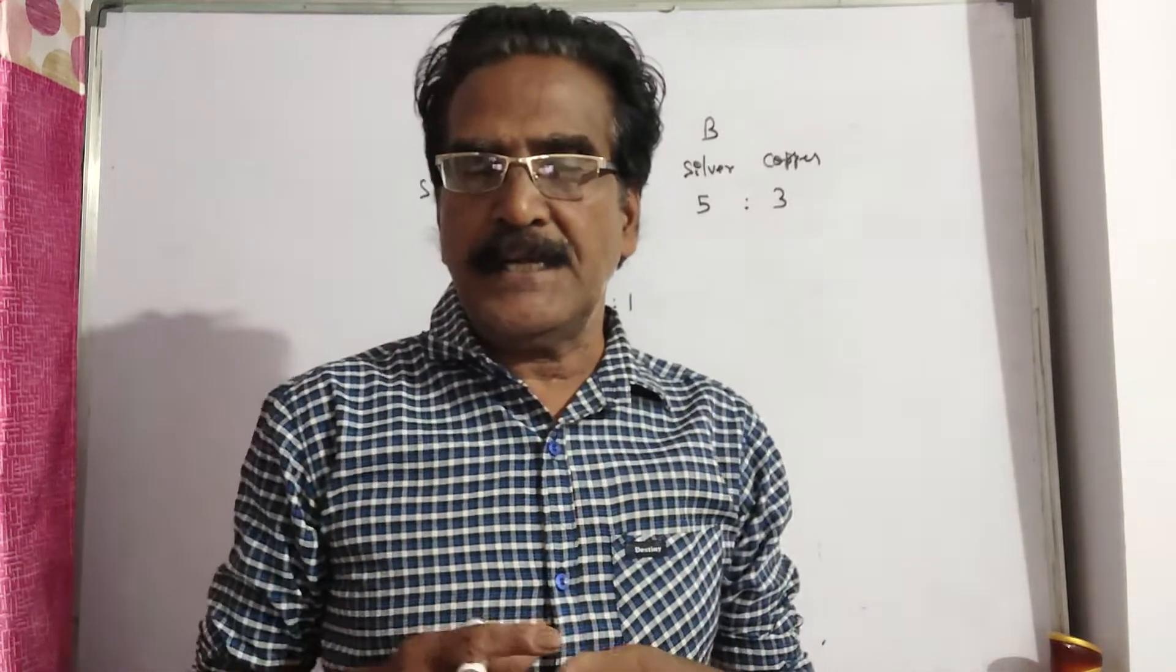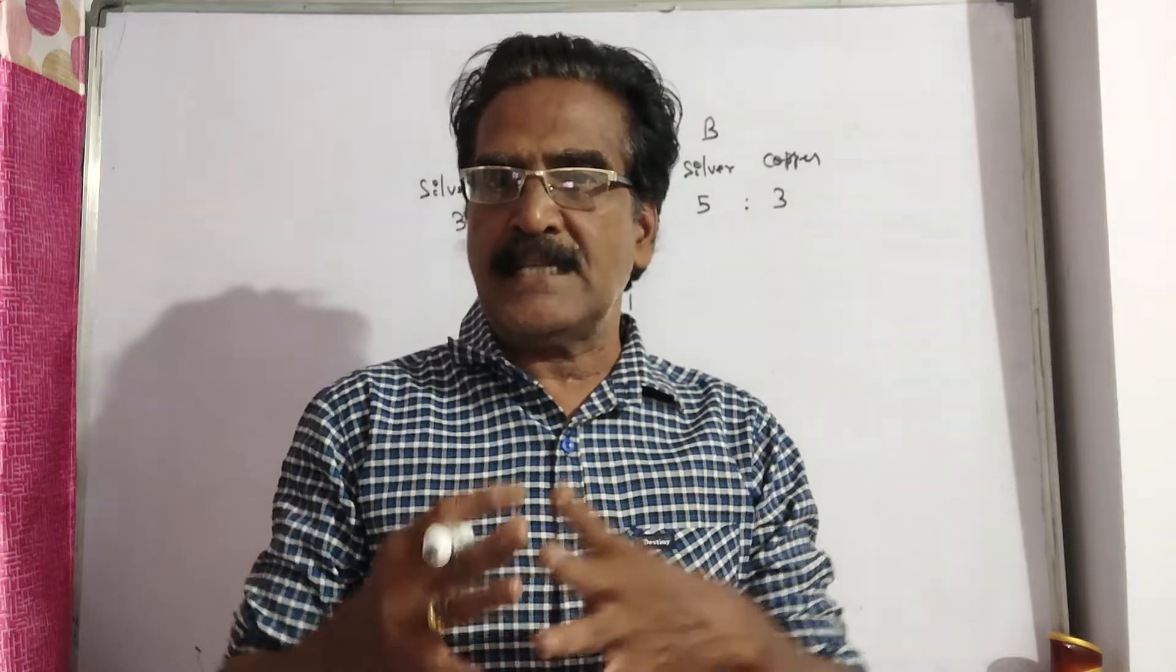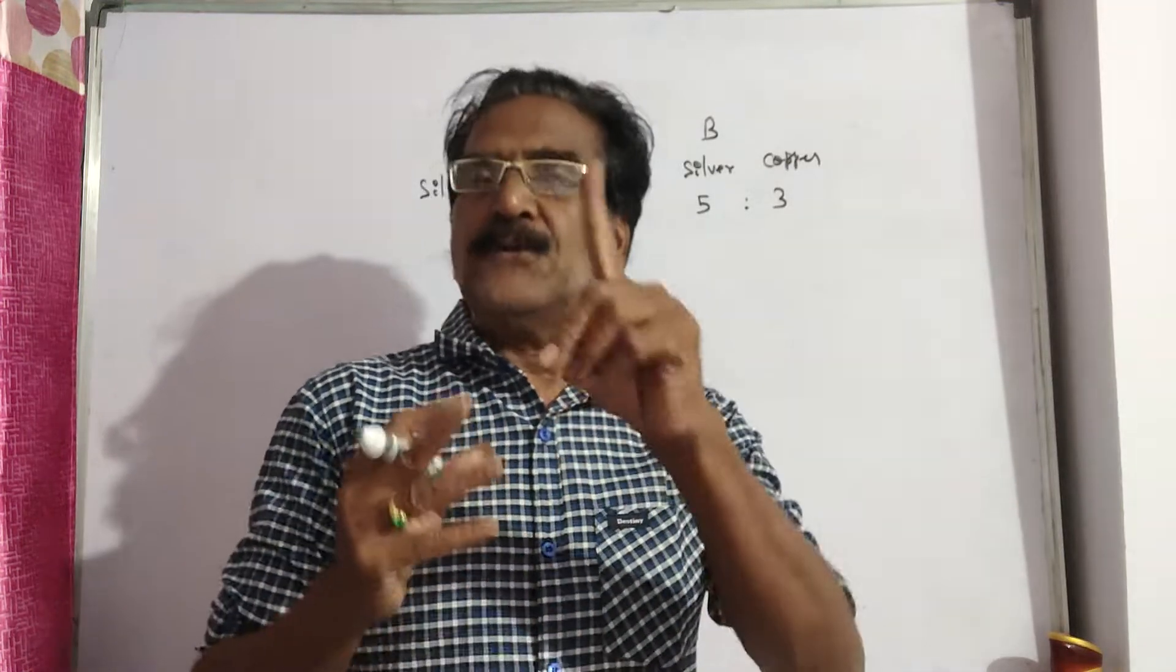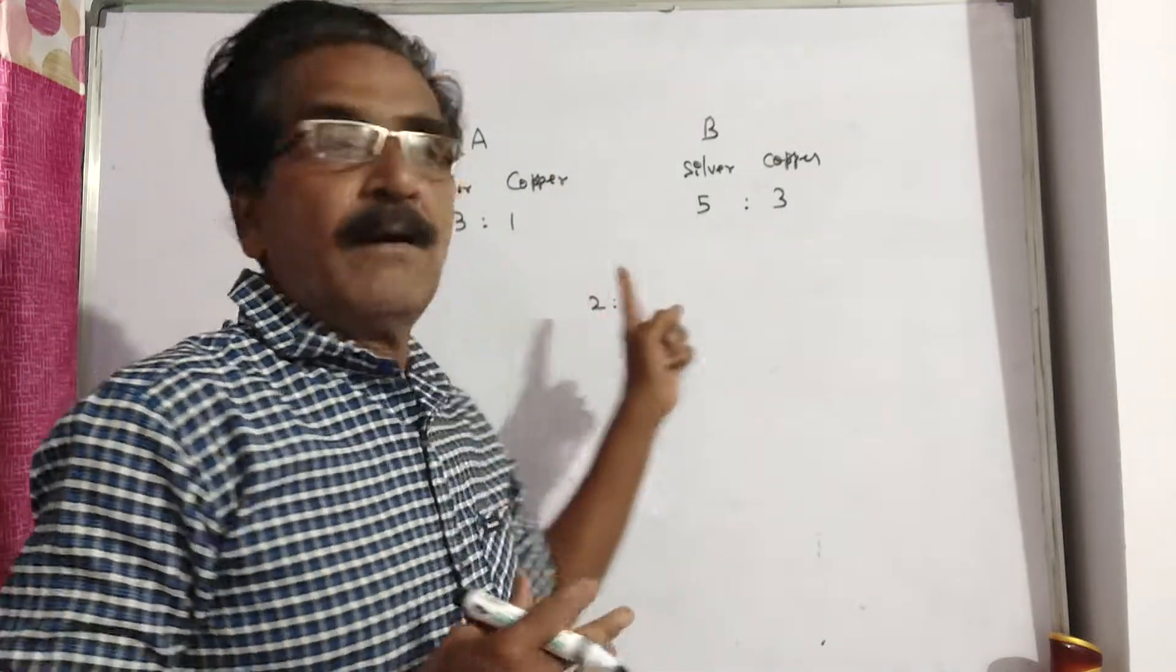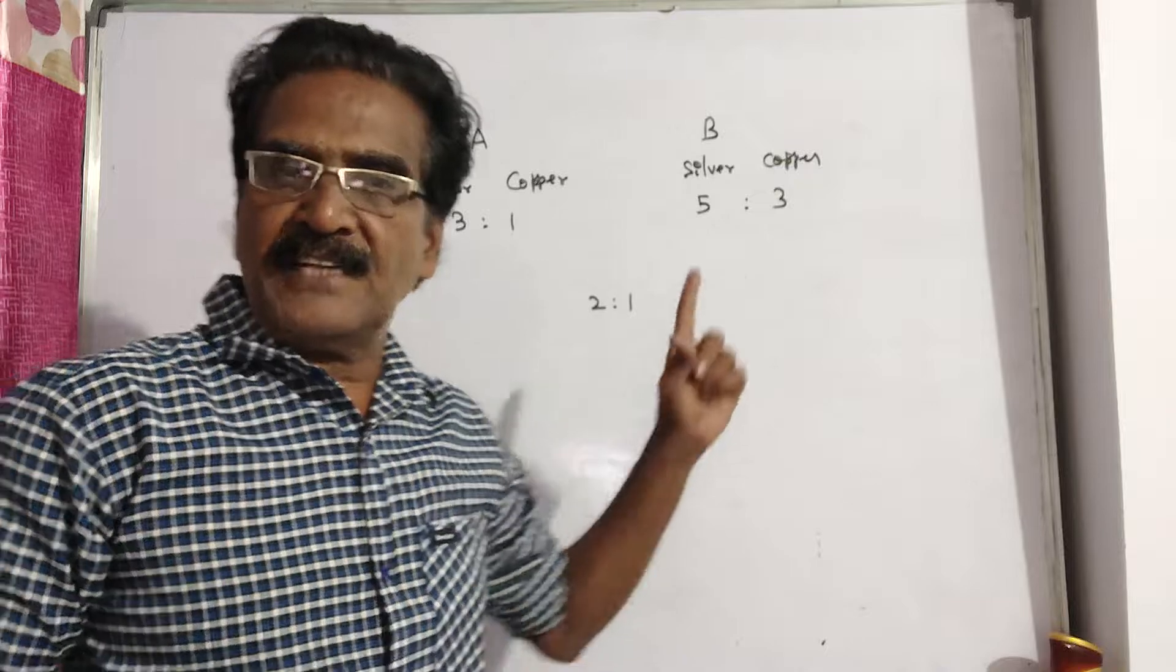Here the question is, in what ratio these two alloys must be mixed to get a new alloy where silver and copper are in the ratio 2 to 1?